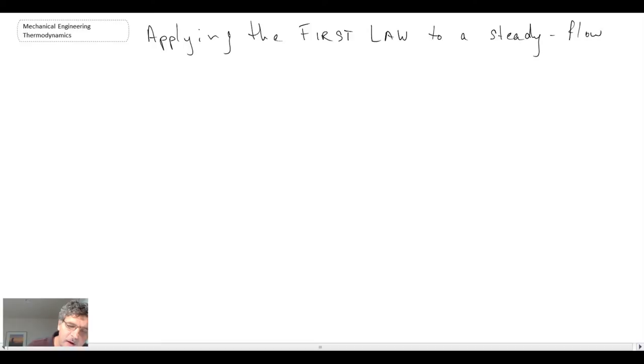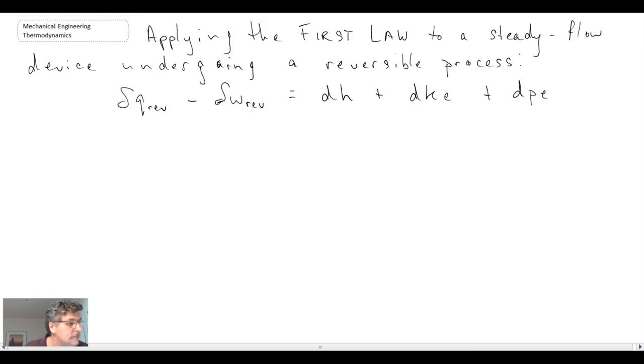We're going to apply the first law to a steady flow device and we will also assume that it's undergoing a reversible process. With that, our first law looks like this. And we denote REV as a subscript for reversible. So that is the first law to a steady flow device undergoing a reversible process.